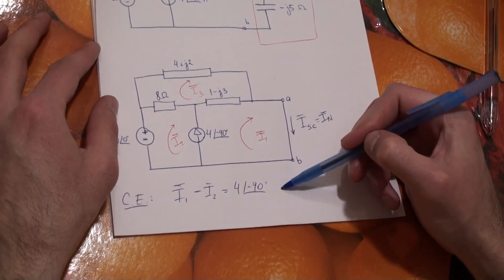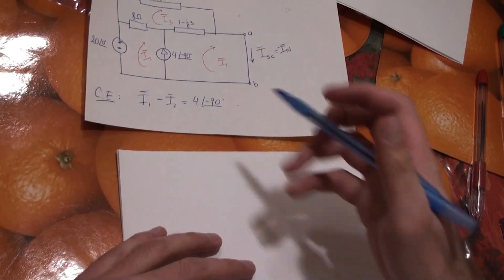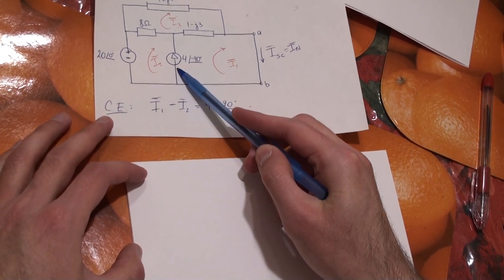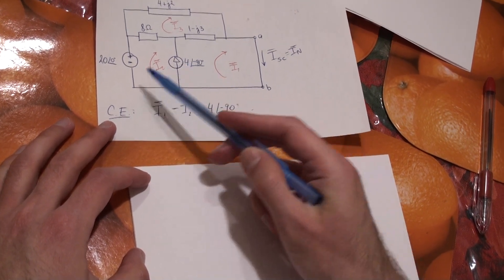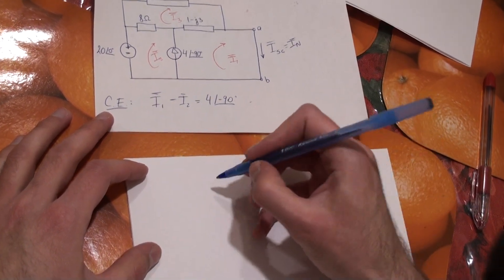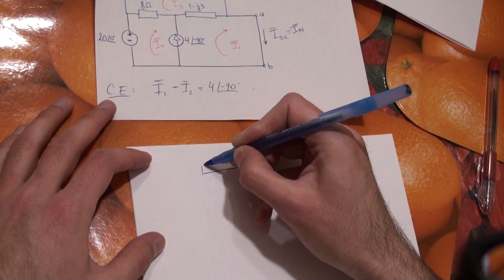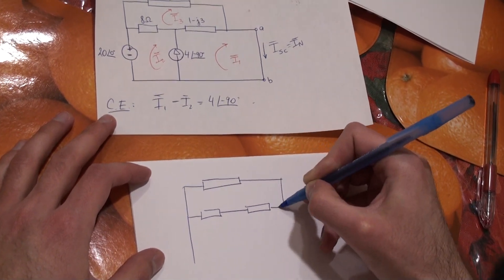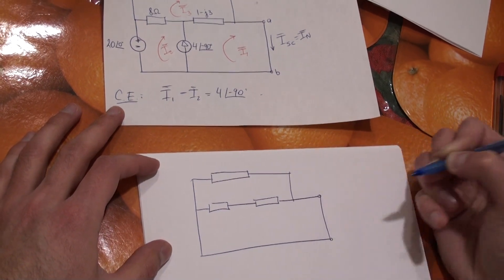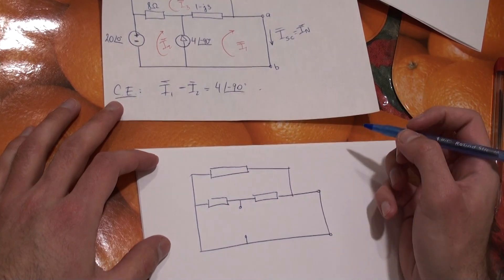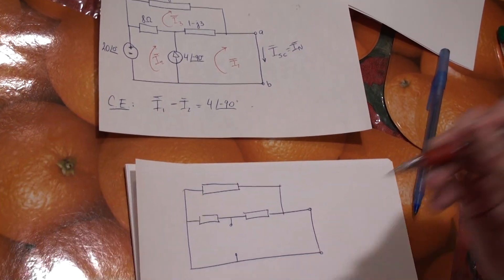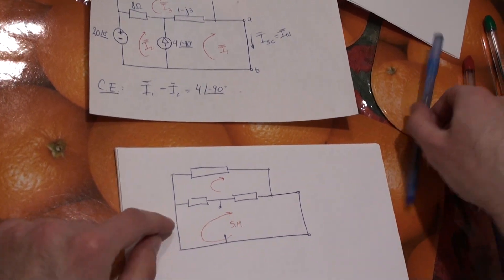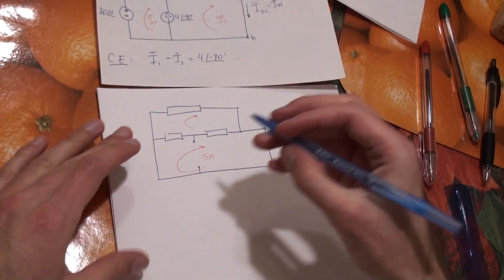We have three meshes and need three equations — we have one so far. To find where to write the remaining two, we draw the helping circuit by turning off all sources: the current source set to zero becomes an open circuit, and the voltage source set to zero becomes a short circuit. This reveals a super mesh.